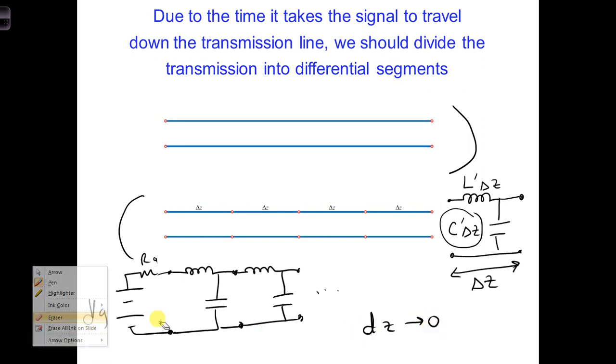Let me not write my delta z that way, to be consistent. I'll put delta z. The transmission line becomes smooth and continuous.